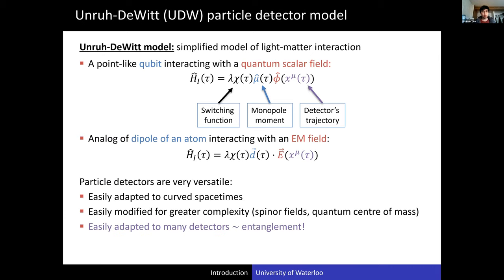Why are these particle detectors very useful? The main reason is because they are very versatile. For any curved spacetime, you can easily change this model to account for it. You can also modify this model to a lot of greater complexity — for example, the scalar field can be easily promoted to quantum fields, the monopole promoted to a dipole, you can make this into a spinor field, include a quadrupole moment, even quantize the center of mass so that the positions of the detector are delocalized, include finite size, and many other things. One of the most important features for entanglement harvesting is that this kind of particle detector model easily accounts for many detectors in spacetime — you can just add however many detectors you want.